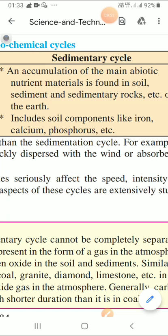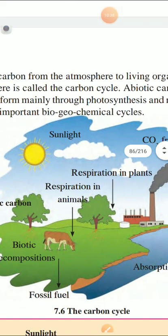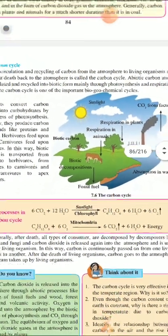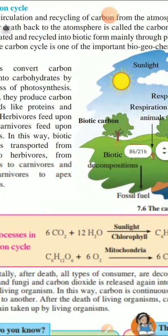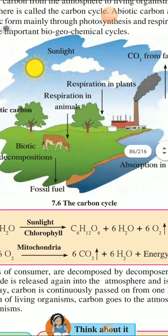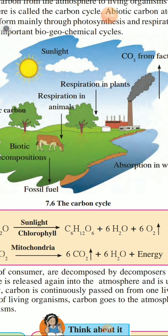Carbon dioxide is present in plants and animals for a much shorter duration than it is present in coal. Now let us understand the composition of gases in the atmosphere. The atmosphere is made up of many different gases including oxygen, carbon dioxide, nitrogen, inert gases, etc. These are important factors and useful for living beings. The amount of these gases in the atmosphere is maintained by the carbon cycle, oxygen cycle, and nitrogen cycle. Let us see the carbon cycle first.